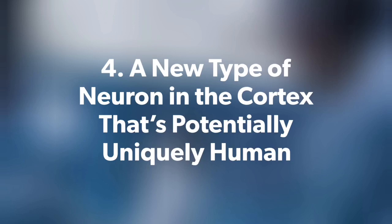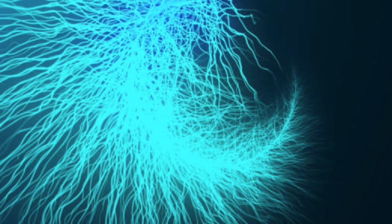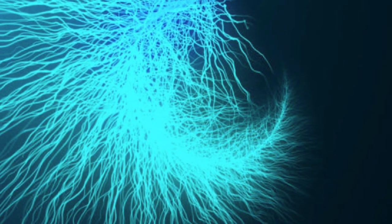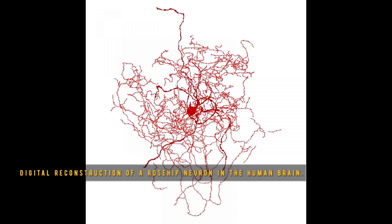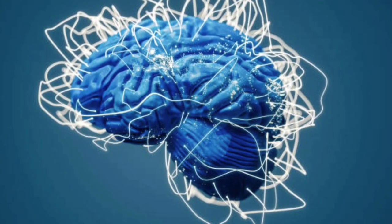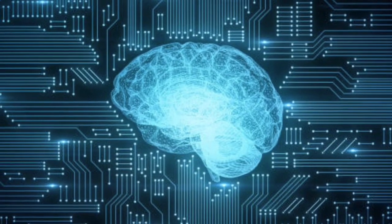A new type of neuron in the cortex that's potentially uniquely human. Perhaps shockingly, even today neuroscientists are still uncovering new cellular components that make up our mighty brains. Last year saw the discovery of giant neurons within the claustrum, a thin sheet of cells that some believe is the seat of consciousness. This year, the Allen Institute in Seattle is back at it with another finding, rosehip neurons.